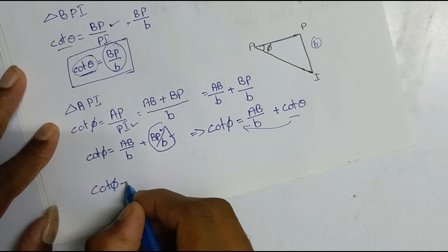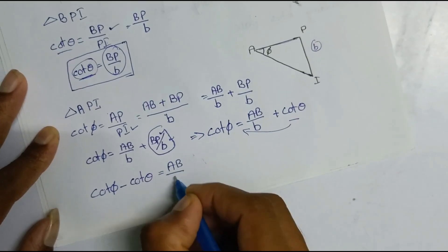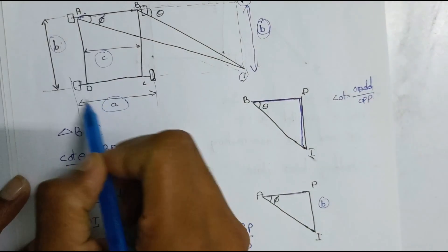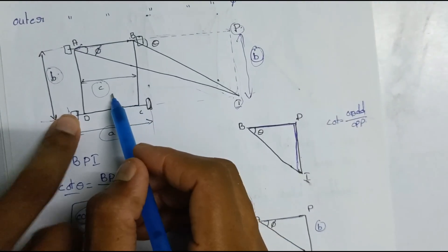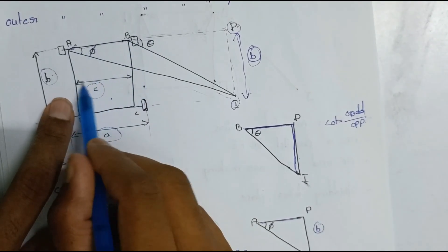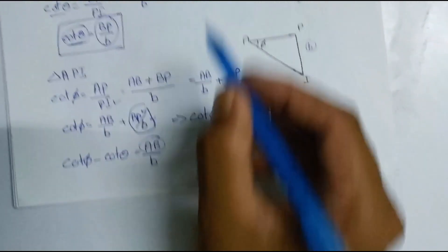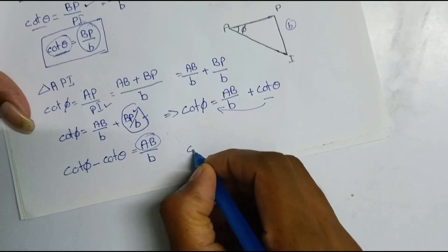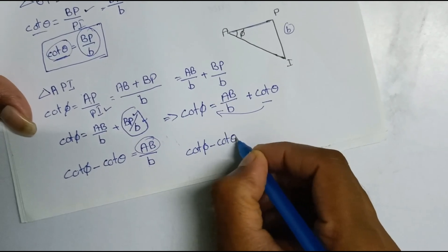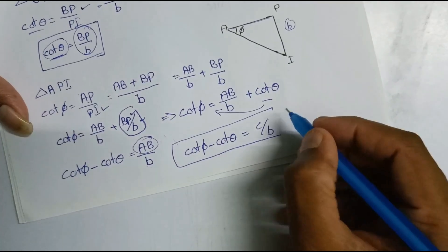Cot phi is equal to A B by B plus cot theta. Cot theta is equal to A B by B. Cot phi minus cot theta is equal to A B by B. Cot phi minus cot theta is equal to C by B.